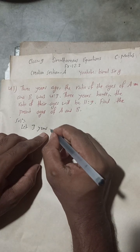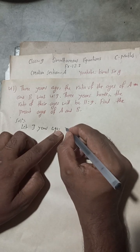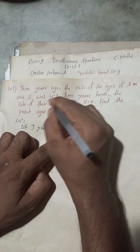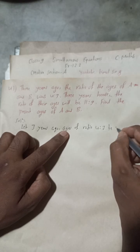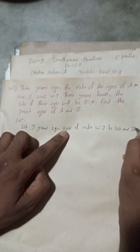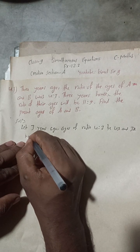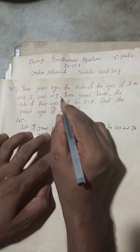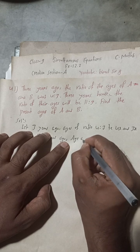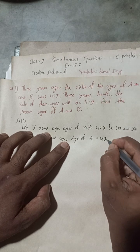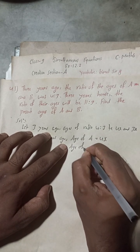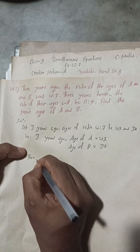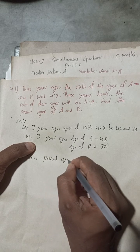Let three years ago the ages in ratio 4 is to 3 be 4X and 3X. So three years ago, age of A will be 4X and age of B will be 3X.